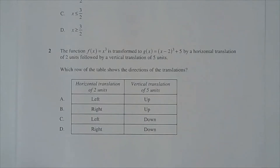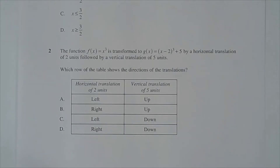Question 2. The function f(x) equals x cubed is transformed to g(x) equals (x minus 2) cubed plus 5 by a horizontal translation of 2 units followed by a vertical translation of 5 units. Which row of the table shows the directions of the translations?